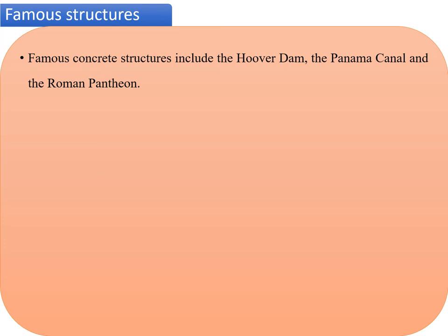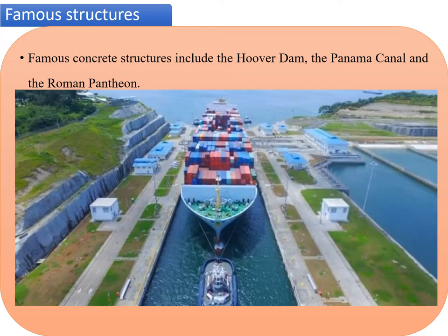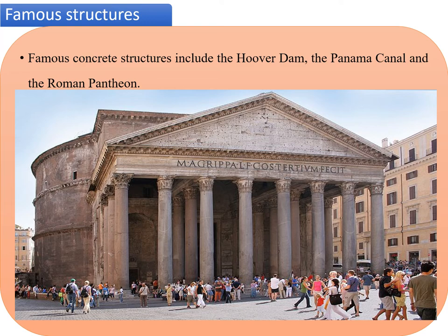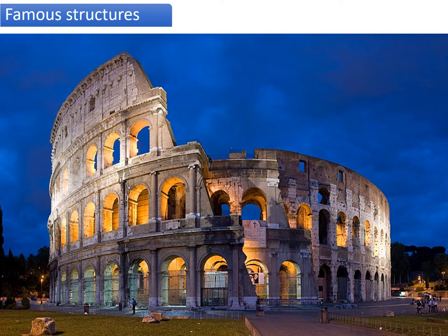Some of the famous structures built during the classical era include the Pantheon, the Colosseum, the Hoover Dam, and the Panama Canal. The earliest large-scale users of concrete technology were the ancient Romans, and concrete was widely used throughout the Roman Empire. The Colosseum in Rome was built largely of concrete, and the concrete dome of the Pantheon is the world's largest unreinforced concrete dome. Colosseums are large amphitheaters used to organize public functions during the Roman era.